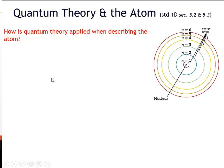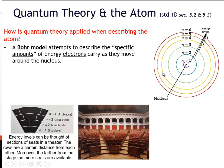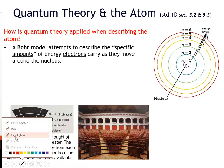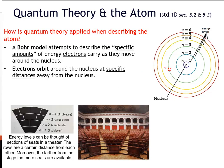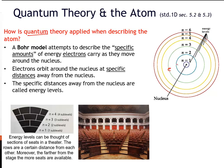So how is quantum theory applied when we're describing the atom? This Bohr model attempts to describe the specific amounts of energy electrons carry as they move around the nucleus. In this Bohr model, there are each of these little levels — essentially these little orbits where electrons move around. As they move around the nucleus at very fast speeds, they carry with them some energy. These electrons orbit at specific distances away from that nucleus, and those specific distances away is the quantum idea of the atom. These orbits are also identified as energy levels, because the further you are from that nucleus, the more energy the electrons possess.